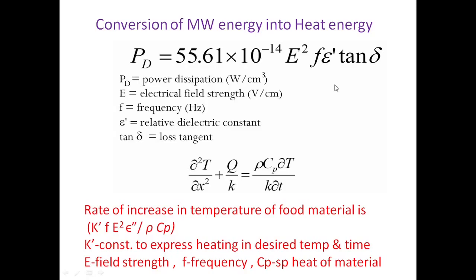To calculate power dissipated in the food matrix, we need: electric field strength E, frequency f, relative dielectric constant ε', and loss tangent tan δ. Dielectric properties can be obtained from standard tables. Frequency is known — 2450 megahertz for domestic and 915 megahertz for industrial use. The electric field strength E in volts per centimeter is difficult to calculate directly.